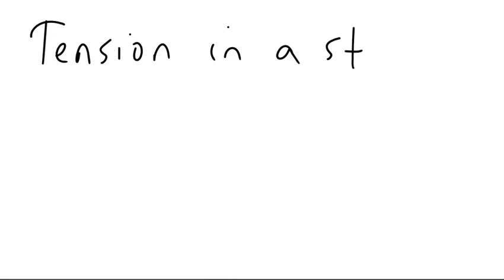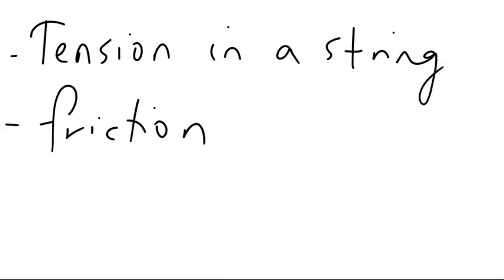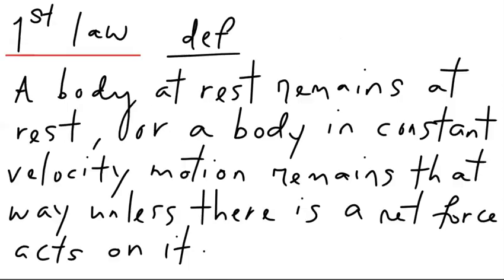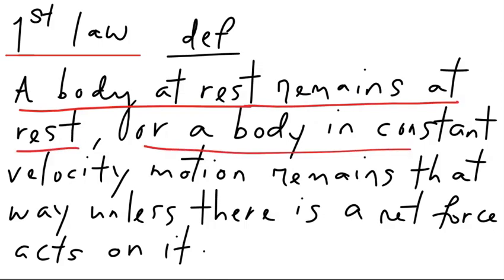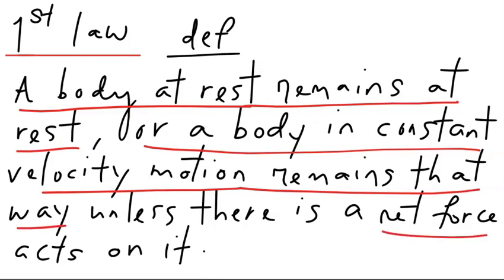Other examples include tension in a string. Now, the definition of Newton's first law: a body at rest remains at rest, or a body in constant velocity motion remains that way, unless there is a net force acting on it. In other words, when no net force acts on a body, the body either remains at rest or moves with constant velocity in a straight line.